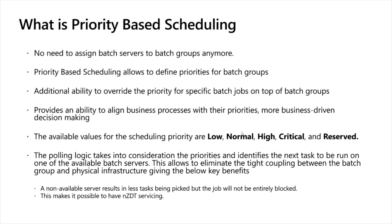With PBS, priority is set at the batch group level. However, if you want to override that at a particular batch job level, that is also possible. For example, you have a batch group set to a certain priority — low, high, or critical — and you have 10 batch jobs within that group inheriting that priority. If you want to run one batch job at a different priority, you can move it to a corresponding batch group or override the priority directly at the batch job level.